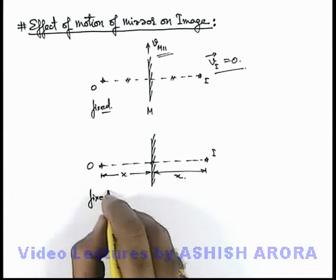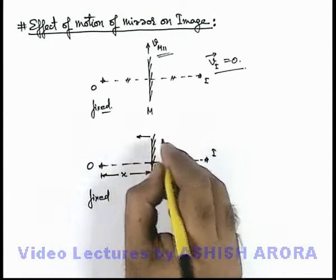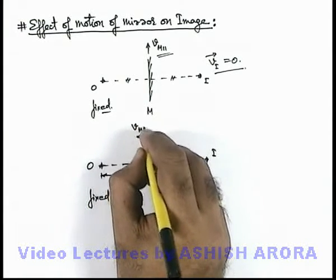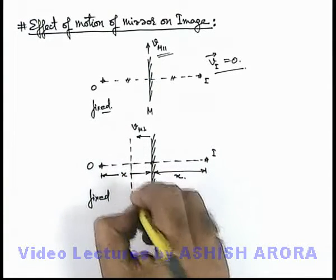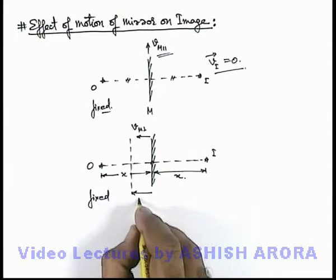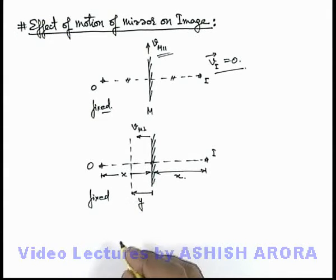Now if object is fixed and mirror is moving in its perpendicular direction with the v-m perpendicular, then we can see in some time the mirror is displaced in forward direction by a displacement y.